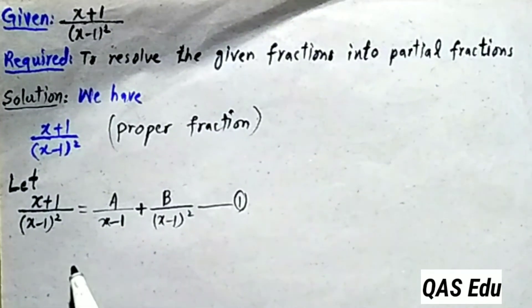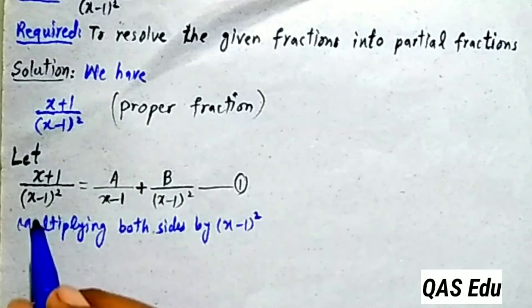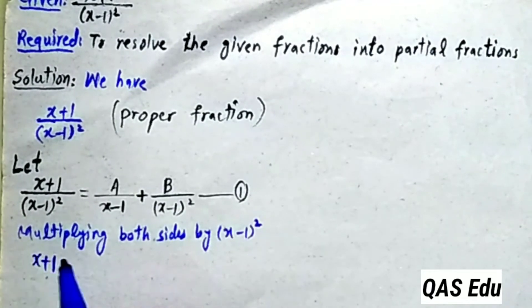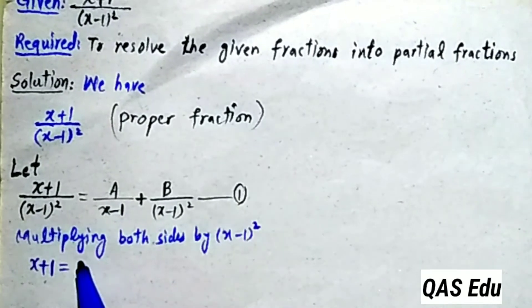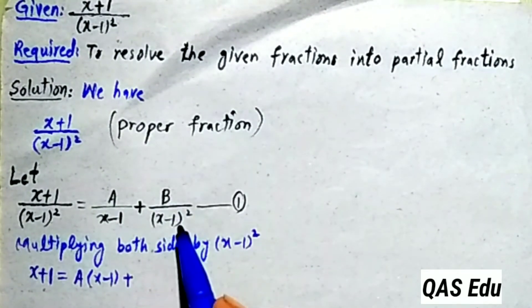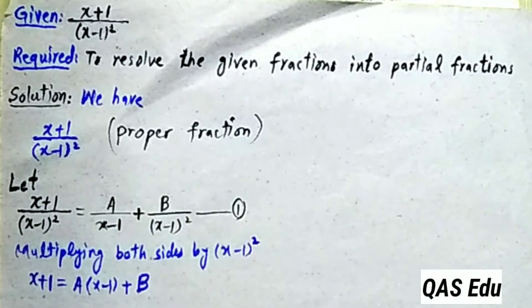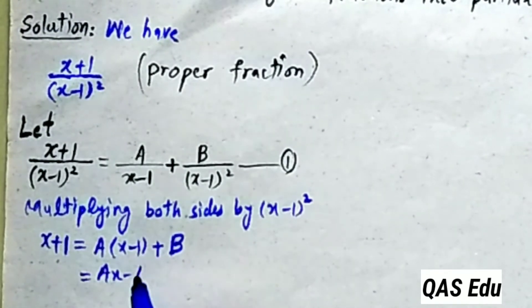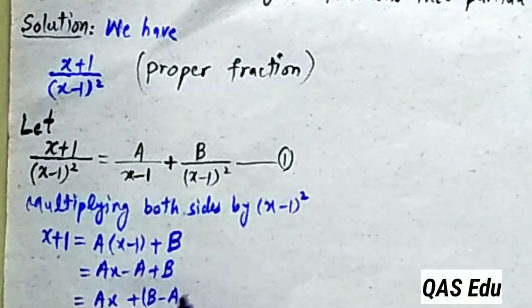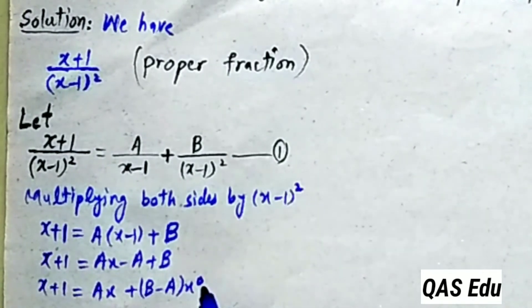Multiplying both sides by (x-1)²: x + 1 = A(x-1) + B. Expanding: x + 1 = Ax - A + B. Simplifying: Ax + (B - A). This is equation number 2.